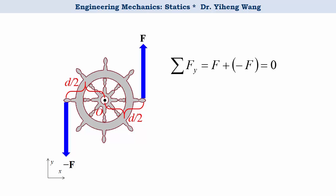We can write the force equilibrium equation: the resultant force acting on this wheel equals F plus negative F, which is zero. This means the forces cancel each other out and therefore have no translational effect on the wheel. These two forces are known as a couple.